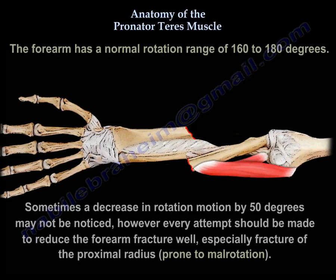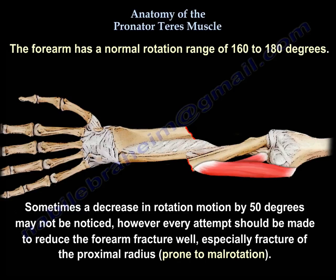The forearm has a normal rotation range of 160 to 180 degrees. Sometimes a decrease in rotation motion by 50 degrees may not be noticed. However, every attempt should be made to reduce the forearm fracture well, especially proximal radius fractures, which are prone to mal-rotation.